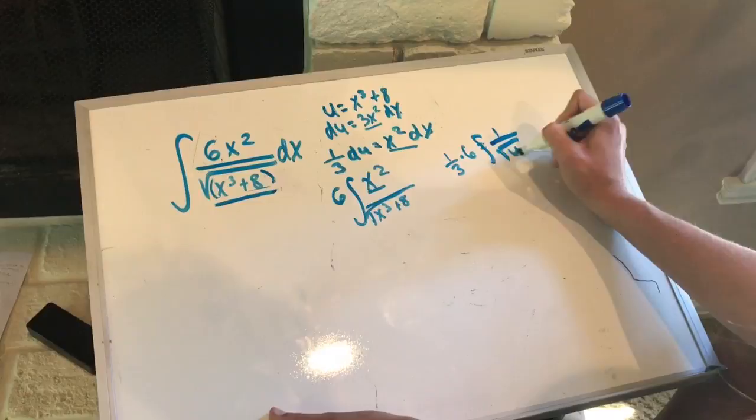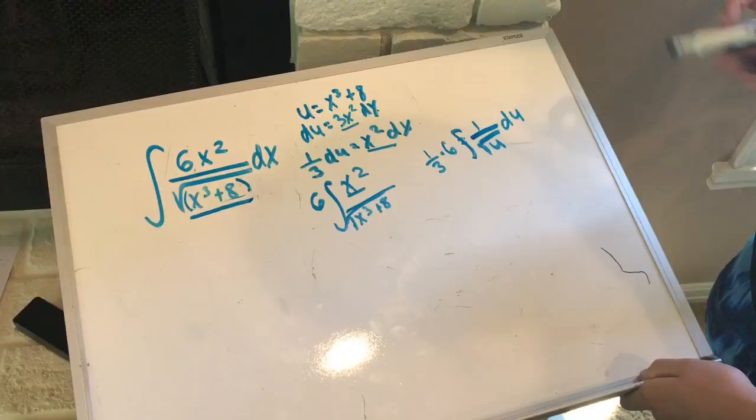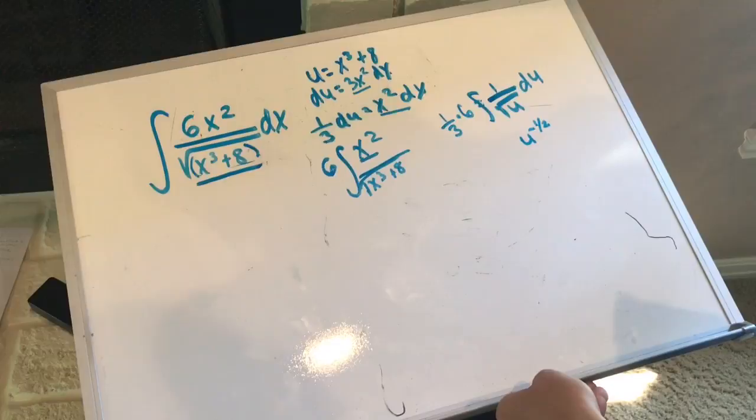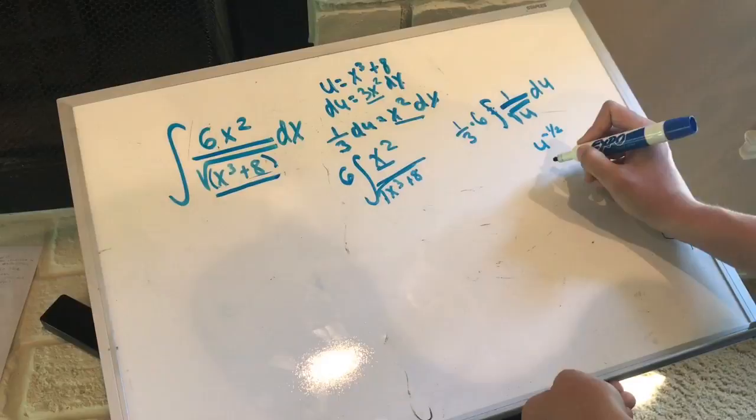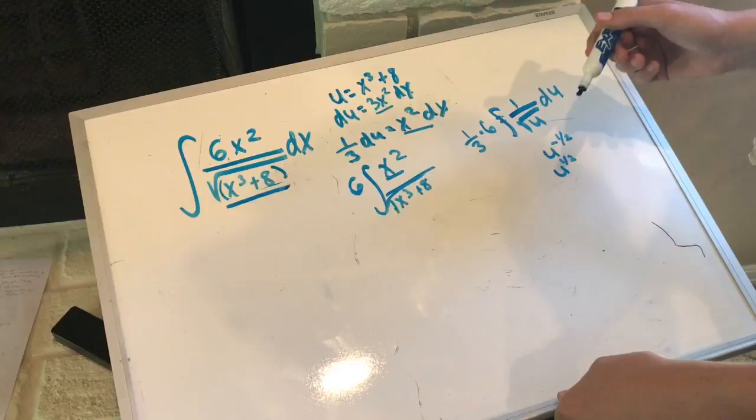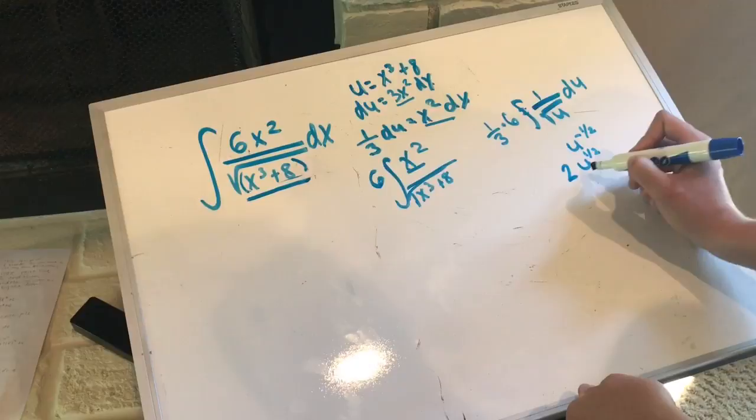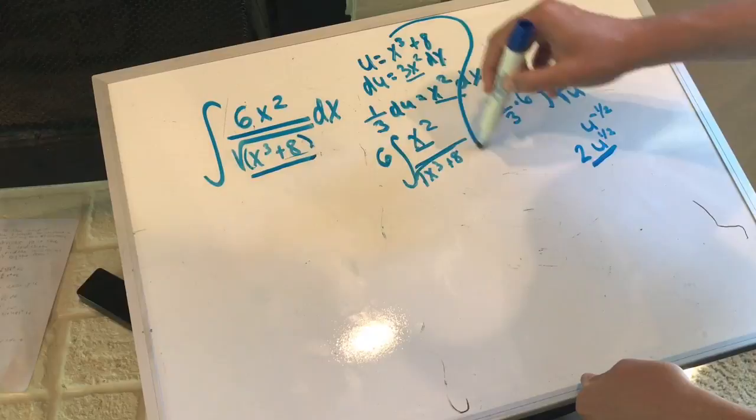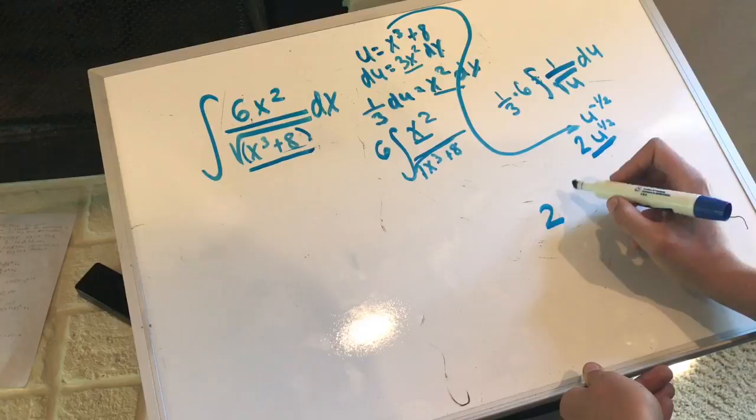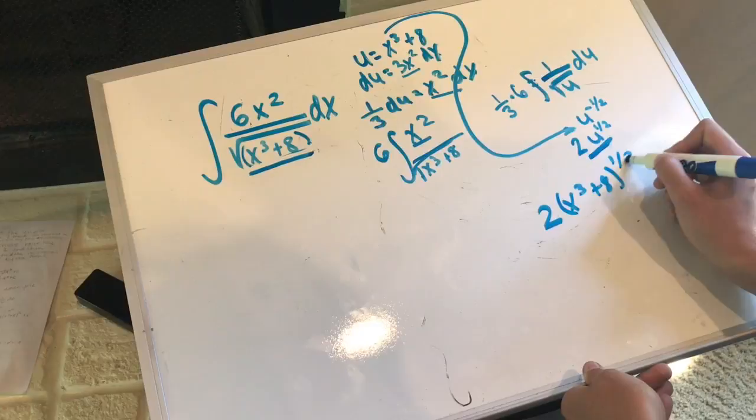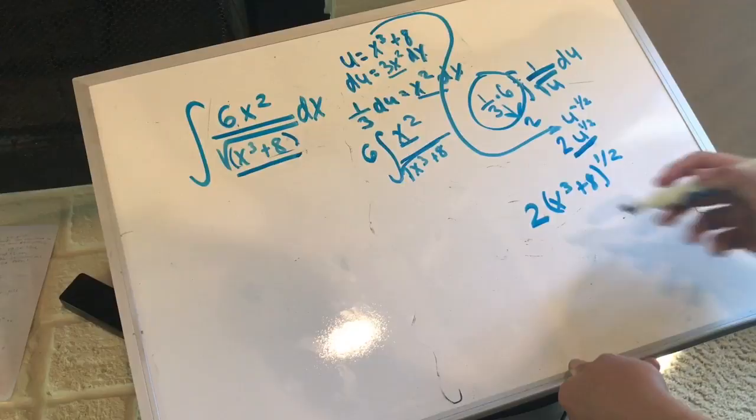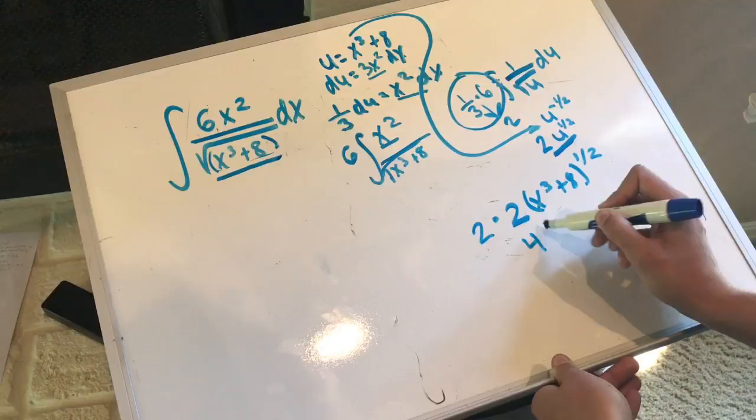Alright, so now, we're just going to find the antiderivative. So, u to the negative 1 half, what do we do, class? We're going to raise it by 1, so, u to the 1 half, we added 1, add 2 over 2 equals positive 1 half, and then multiply it by the reciprocal, so 2. Then, we're left with this, and what's u? We're going to substitute u, put it in there. So, 2 times x cubed plus 8 to the 1 half, and do not forget this 6 over 3, which turns into 2. So, we multiply by 2, we get 4 times x cubed plus 8 to the 1 half, and what do we never forget, class? Plus c. And there we have it, it's our answer.